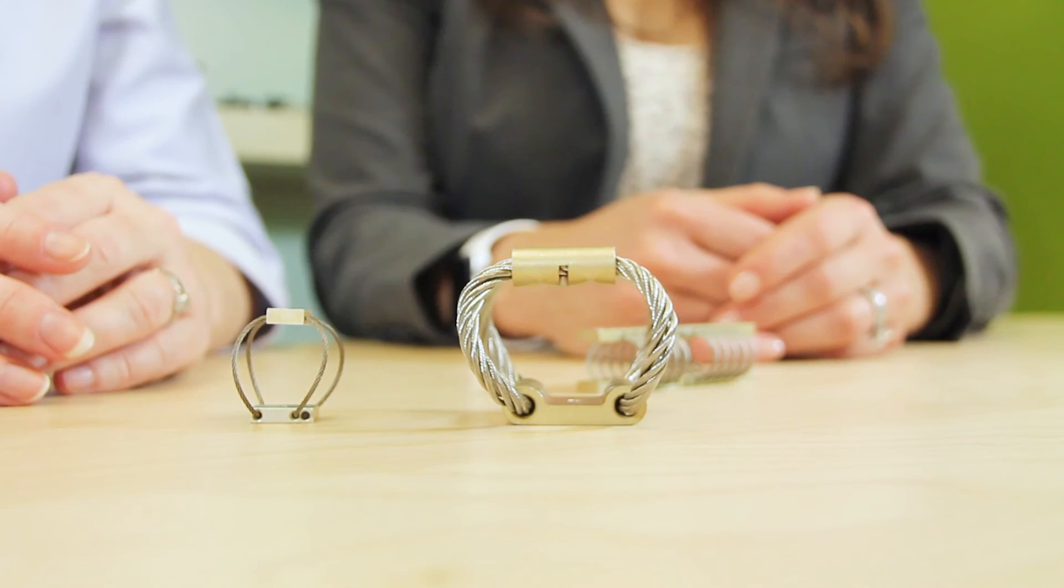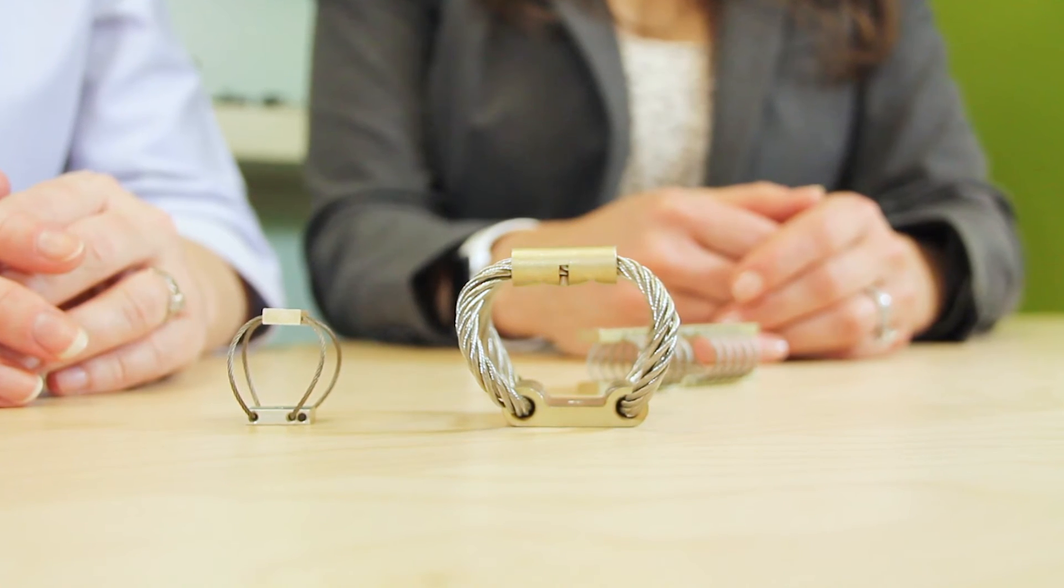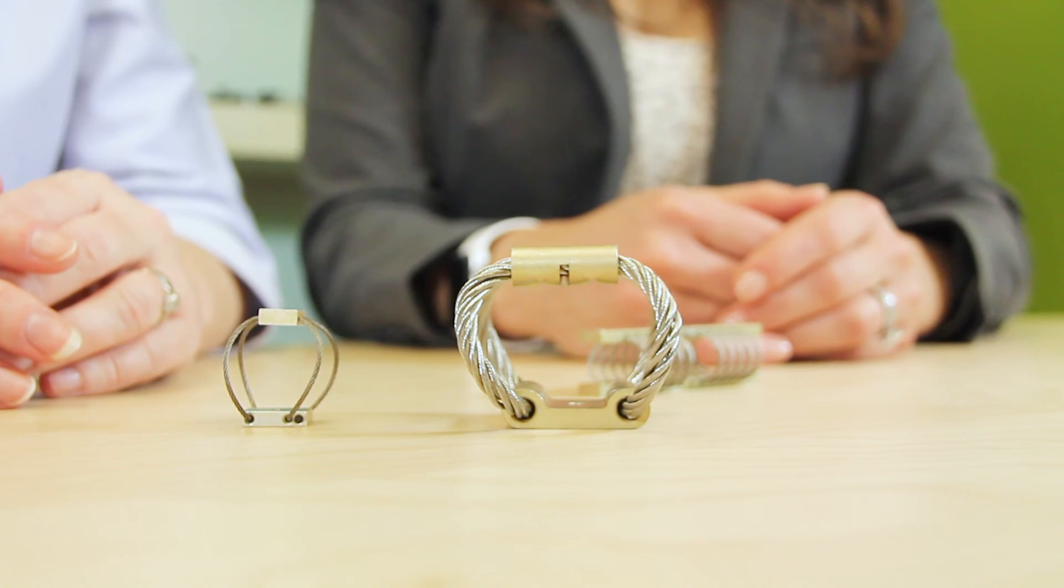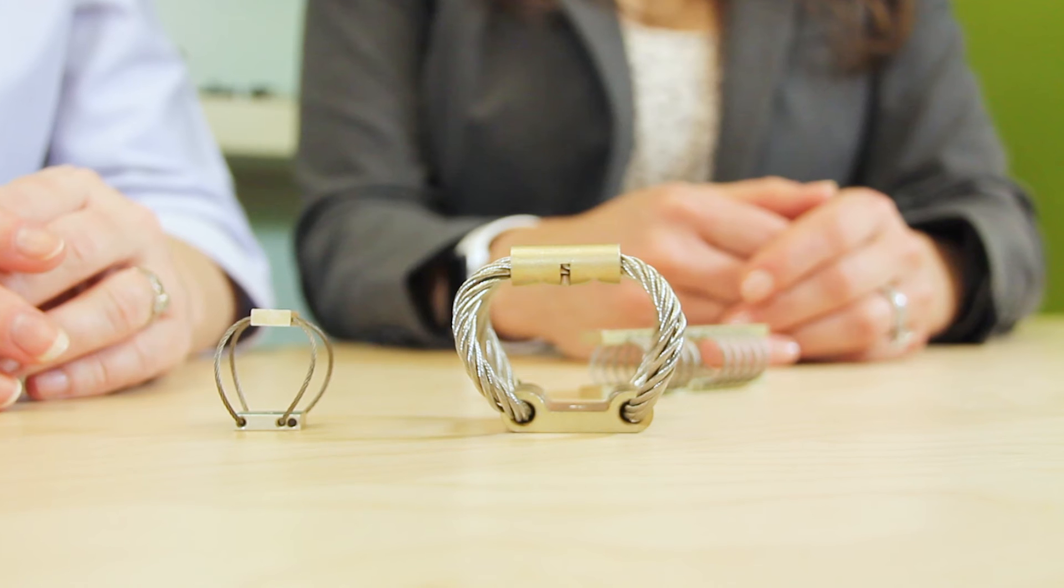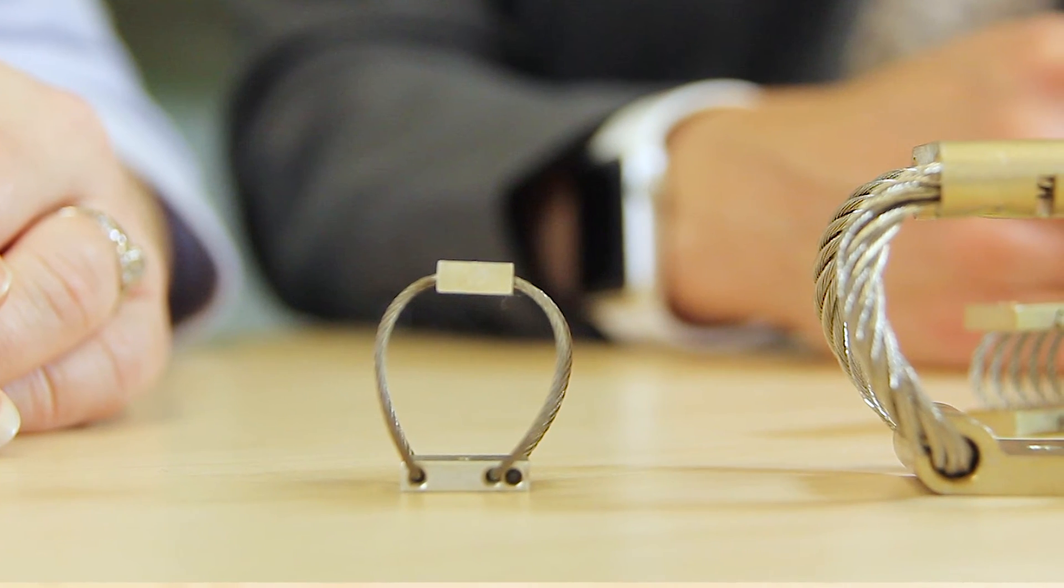Wire rope isolator selection is a three-step process. First, the designer defines the system into which the isolator is going, by supported load, number of isolators to support the load, and whether the application will see just compression or rolling. Then the engineer defines the excitation and natural system frequencies and calculates maximum isolator stiffness.